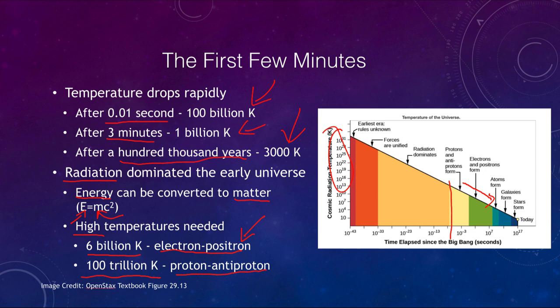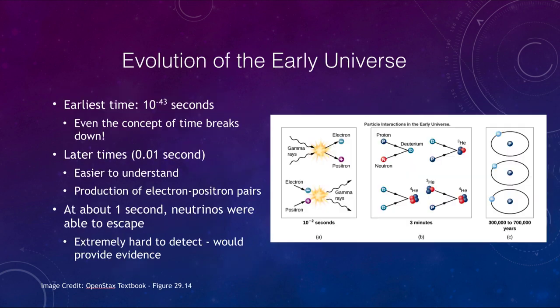The very earliest time we can describe is 10 to the minus 43rd seconds — imagine drawing those 43 zeros after the decimal point to reach this first instant. The problem is that at this point even our concept of time starts to break down, so our equations become meaningless. We simply cannot know anything that early, but it's important to try to understand because it's when everything was starting.